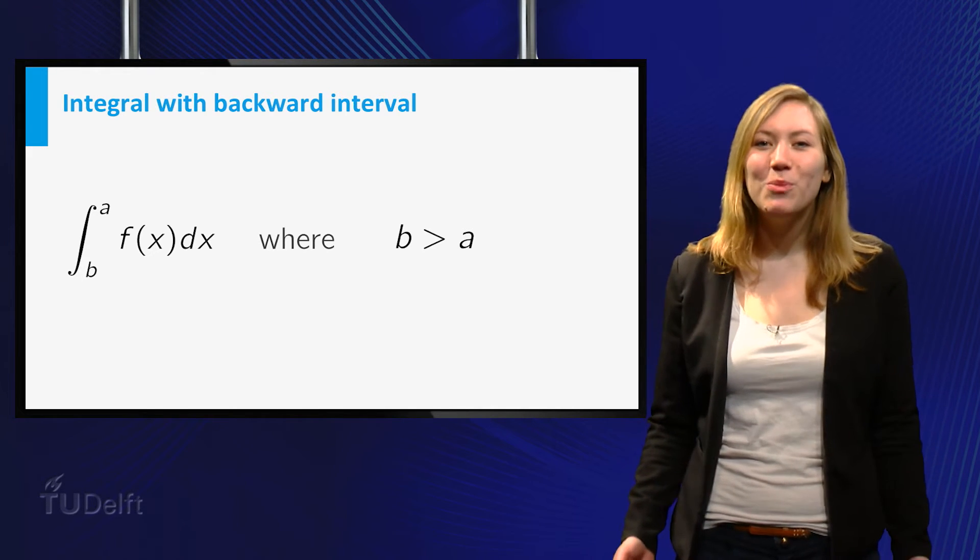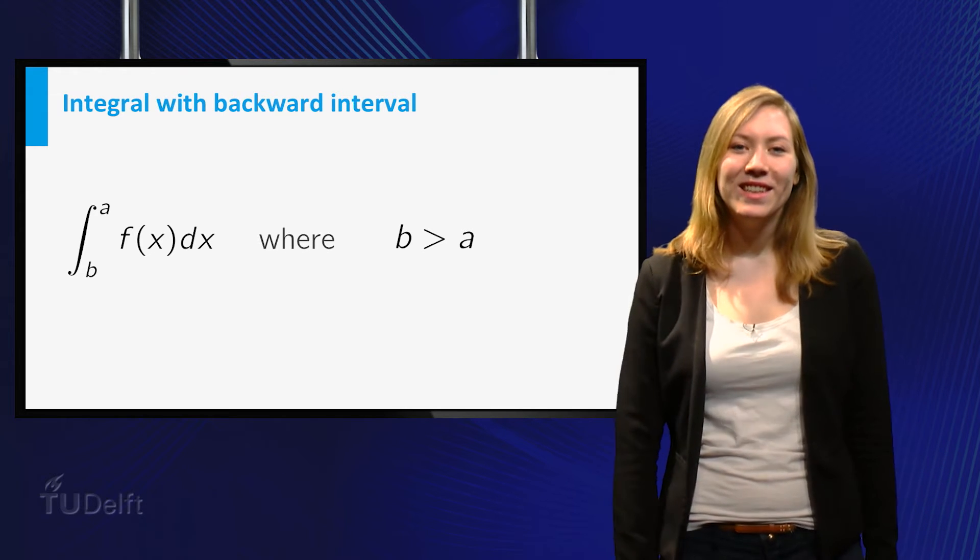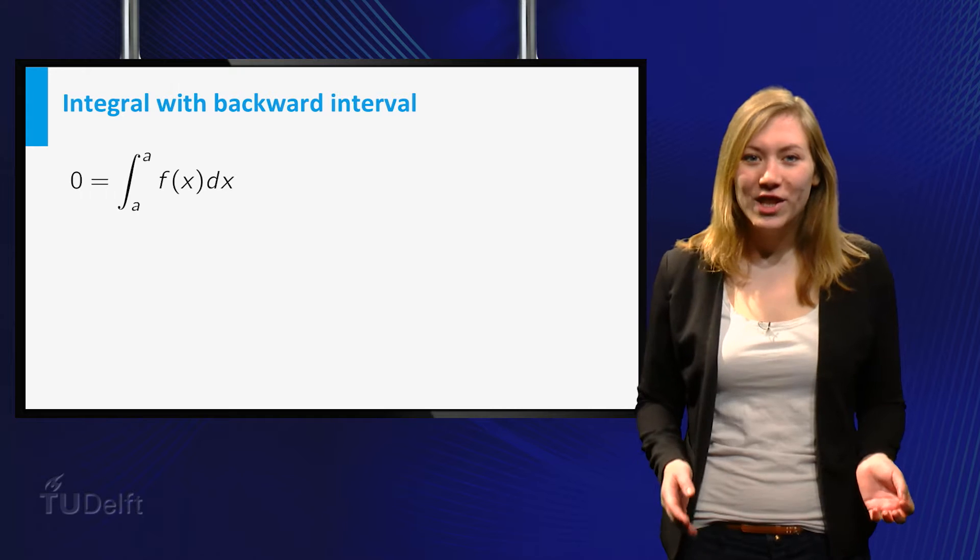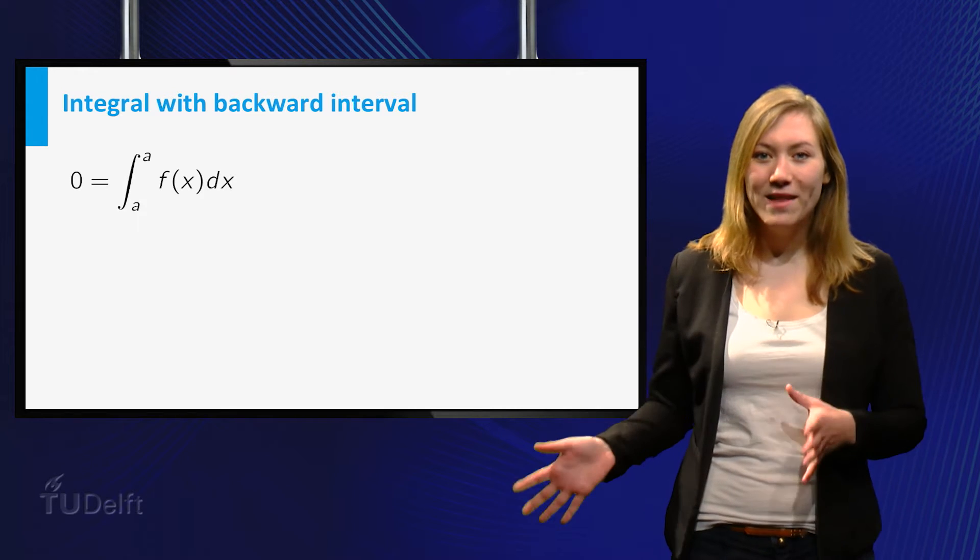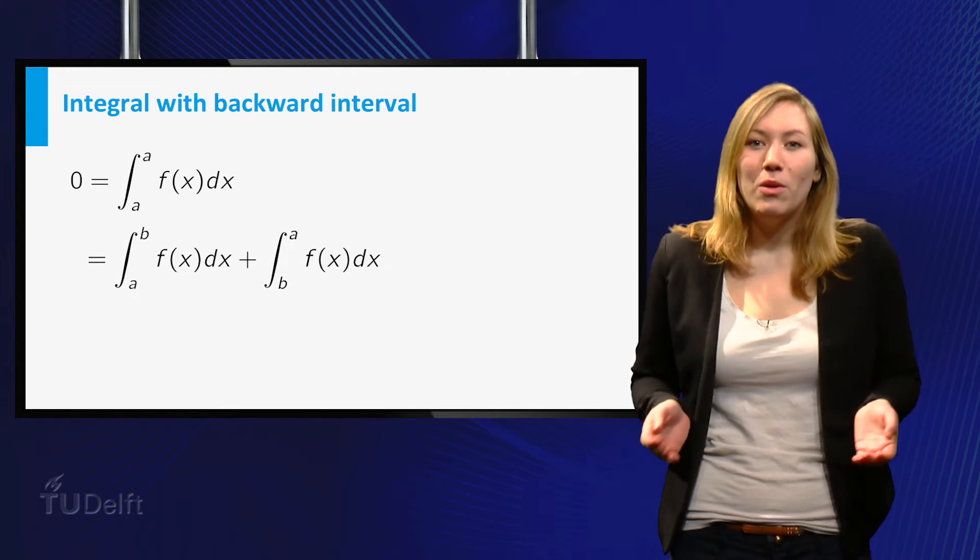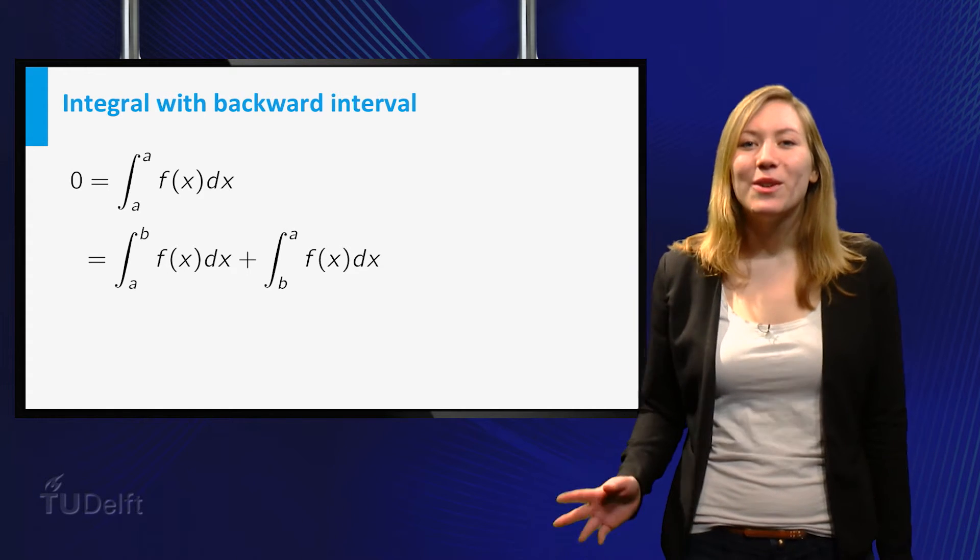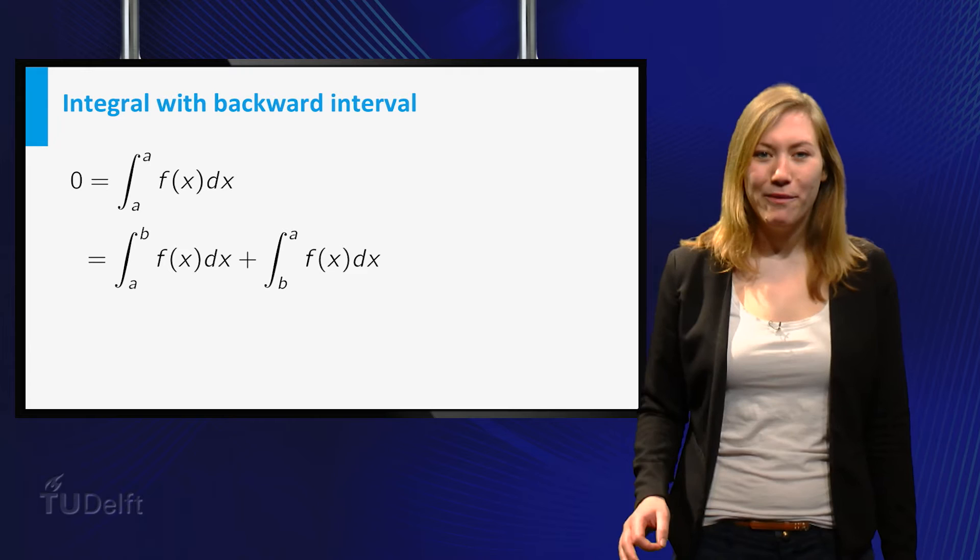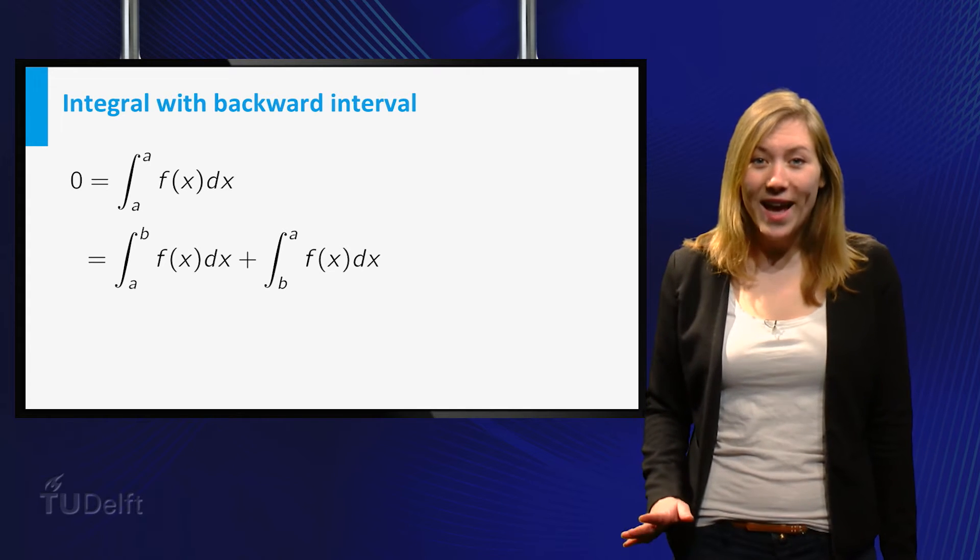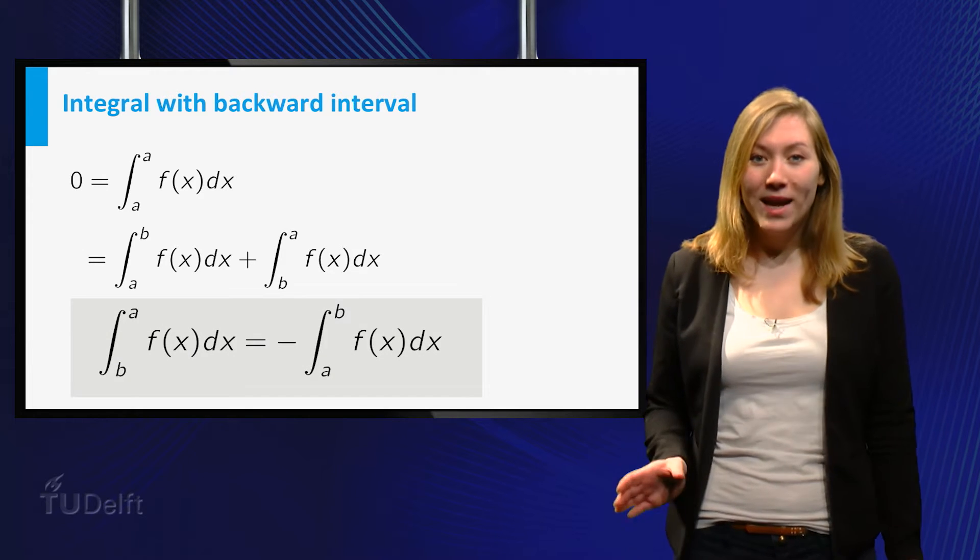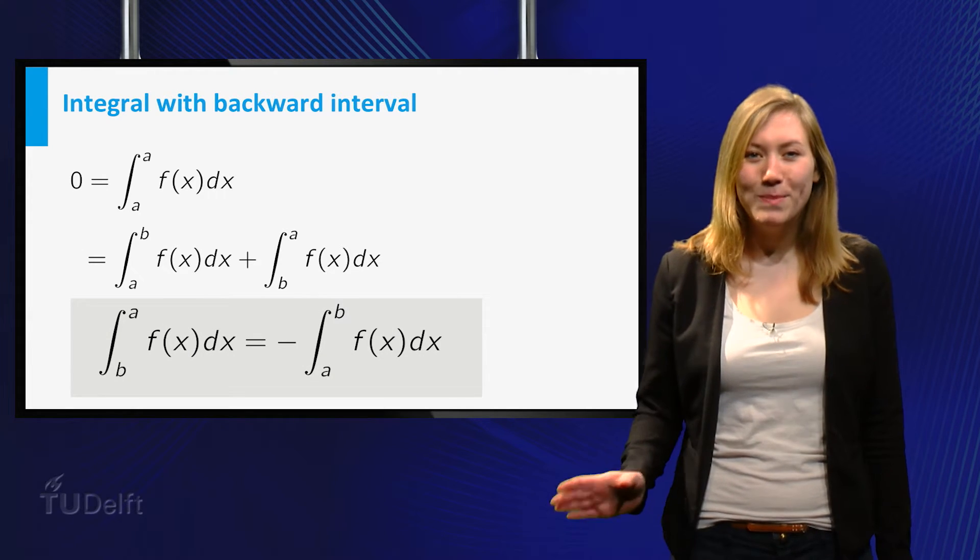We are going to use our last two properties to determine that. So if we would take the integral of f from a to a, we could actually split that in an integral from a to b and add that to the integral from b to a. You know that the integral from a to a equals zero for every function f, so these integrals should add to zero. This means that the integral from b to a is minus the integral from a to b.